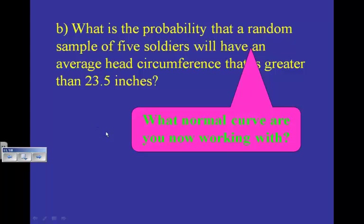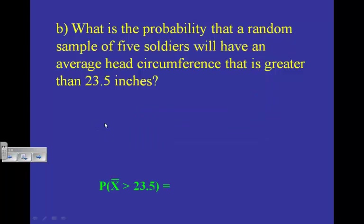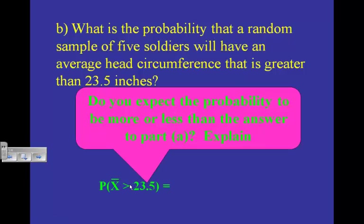We're looking now for the probability that x-bar — because we're dealing with a sample of 5 — is greater than 23.5. Do you expect the probability to be more or less than the answer in part A?